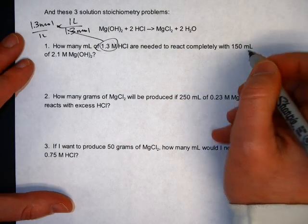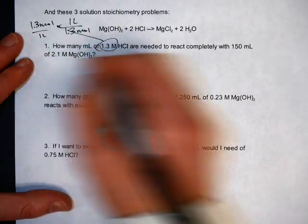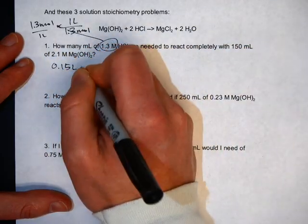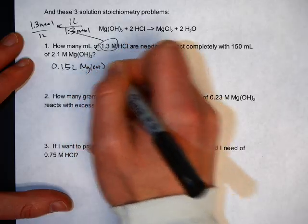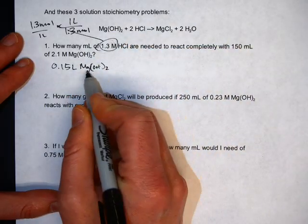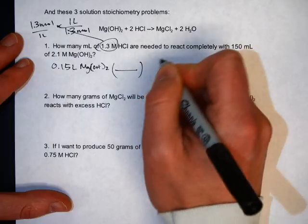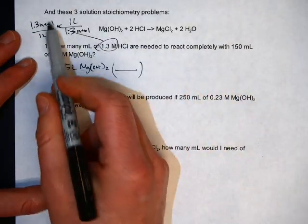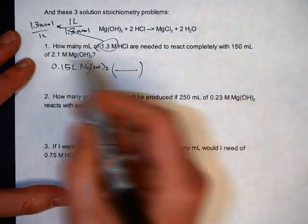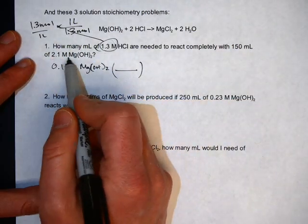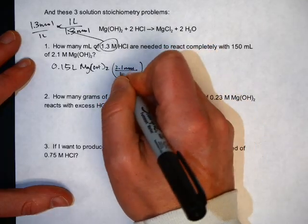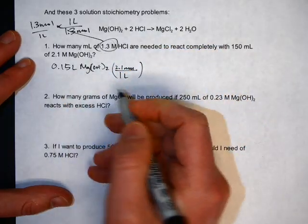Start with 150 milliliters of the magnesium hydroxide, but convert it to liters first. So divide by 1,000, that would be 0.15 liters of Mg(OH)2. People have had more luck here if they're writing out their labels. It kind of keeps things straight for them. So the first parenthesis to get from liters to moles is to use this. Not 1.3, we're going to use the 2.1. 2.1 molar means 2.1 moles per liter. 1 moles in 1 liter. See how liters cancels out liters, and that's going to be good.